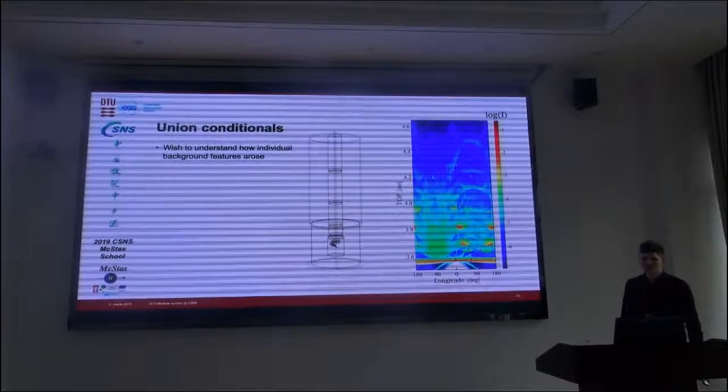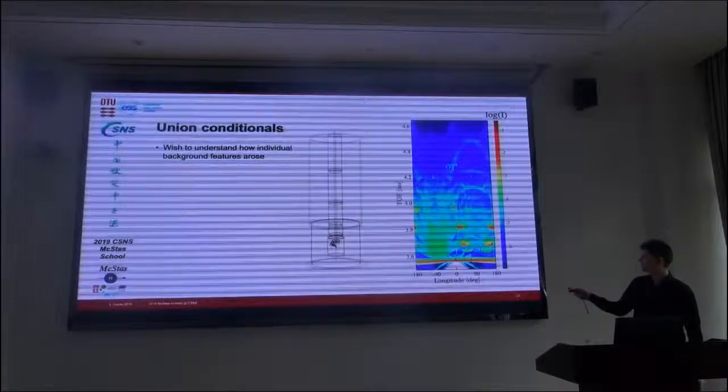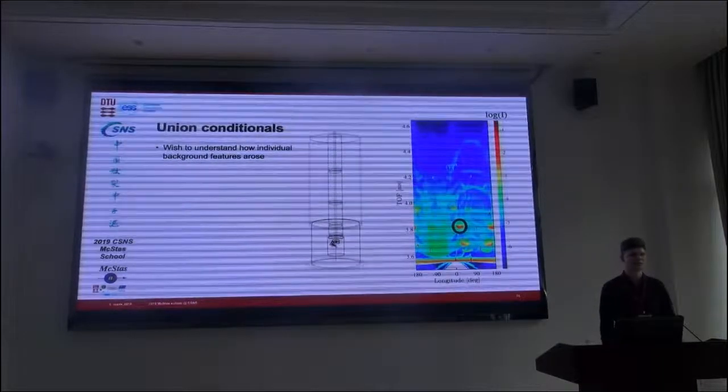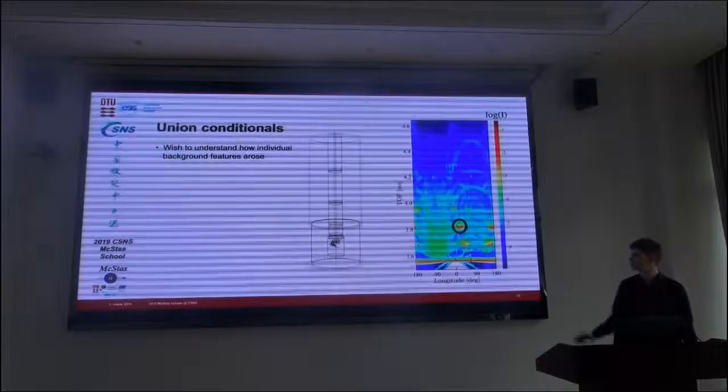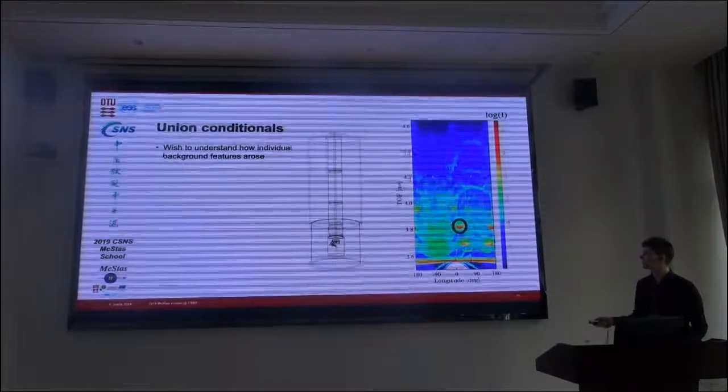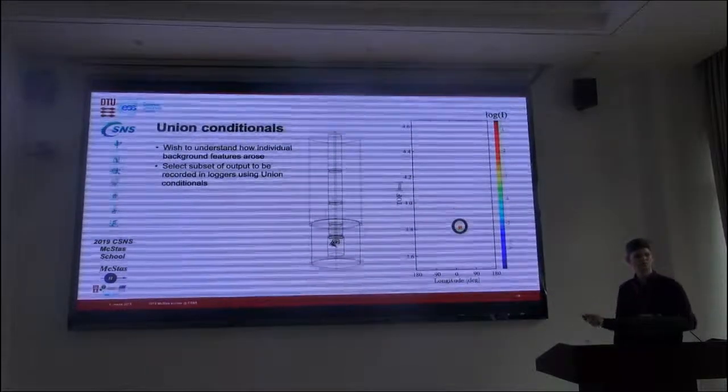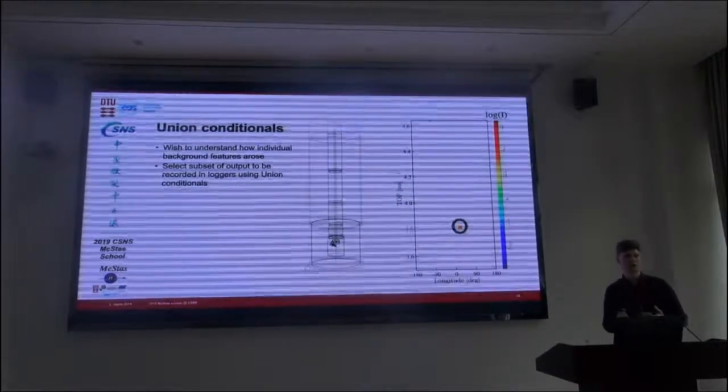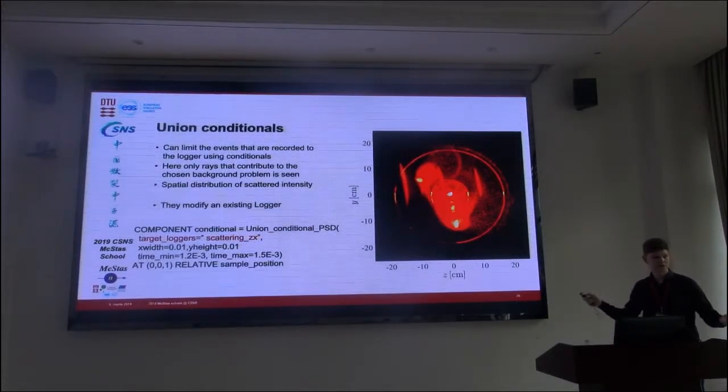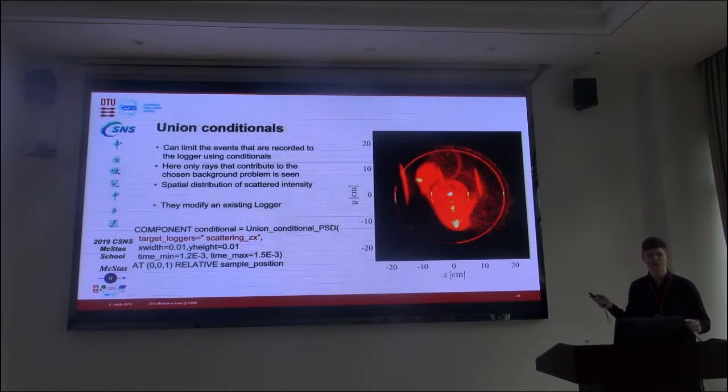But to be honest, this still doesn't get us very far in terms of understanding where this background comes from. For example, this thing here is what is annoying my measurement. How do I know what part of this chaotic cryostat simulation produced that? Well, there's another kind of component called a conditional component that will help us. It will modify some logger and remove all other events. So that only the events that contributed to this little background problem is included in that logger. And here is such an image for this particular little background problem. We see that the sample is definitely involved because that has the highest intensity. And perhaps also this Bragg peak probably.